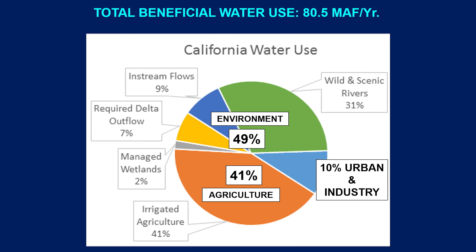The distribution of water resources among various sectors shows that the environment takes 49% of total beneficial water use — used for rivers, in-stream flow, pushing back ocean water intrusion in the delta, and managed wetlands. Agriculture, mostly irrigated, takes 41%, while the remaining 10% is for urban and industrial use.